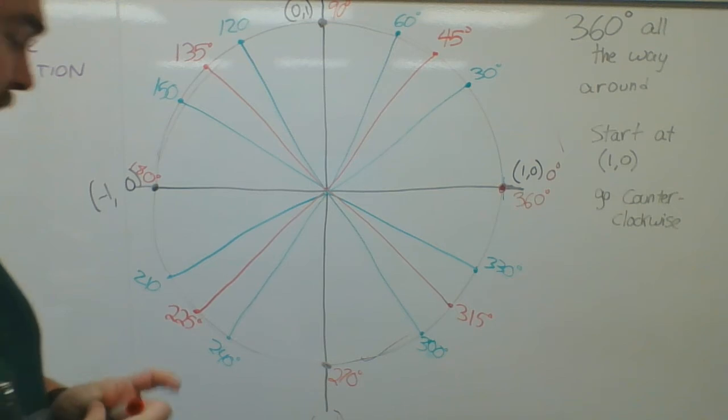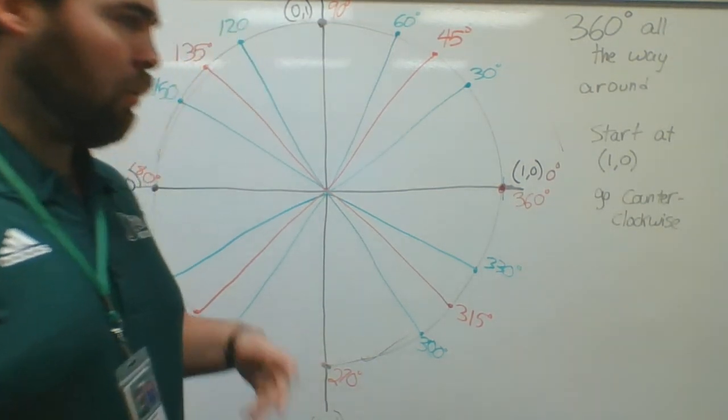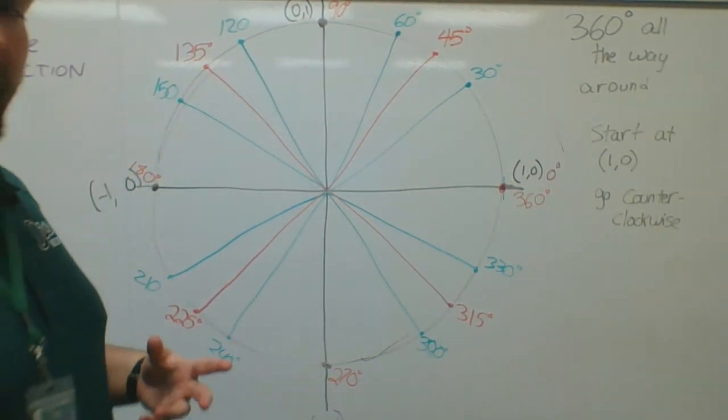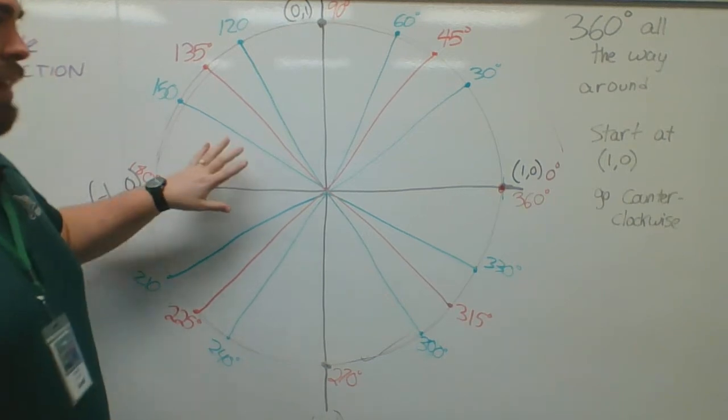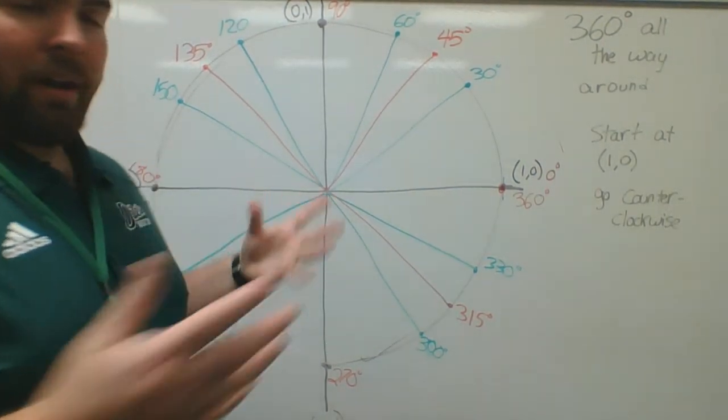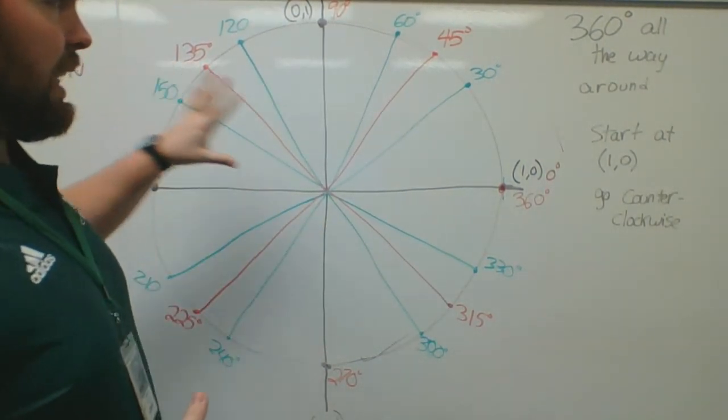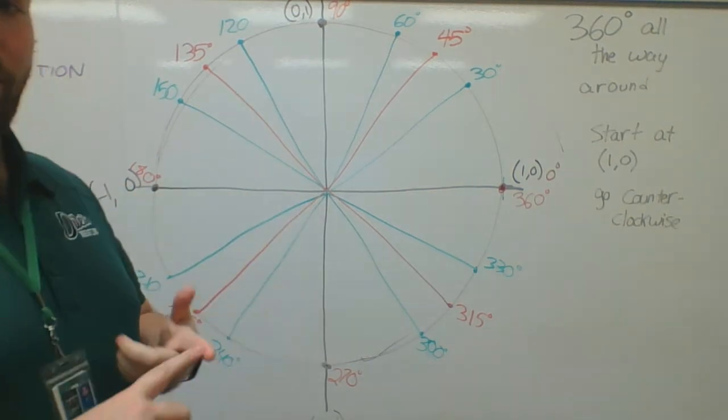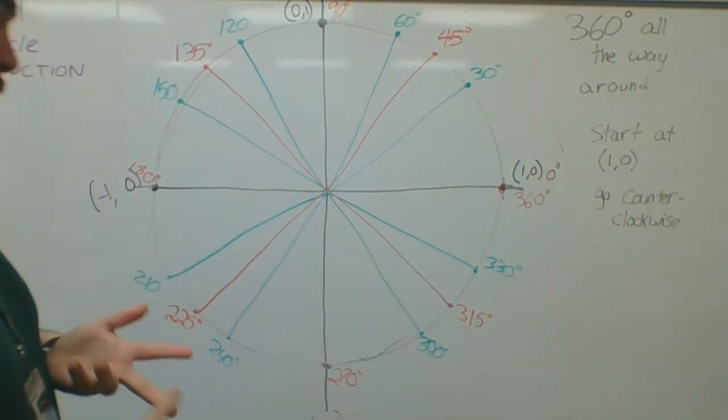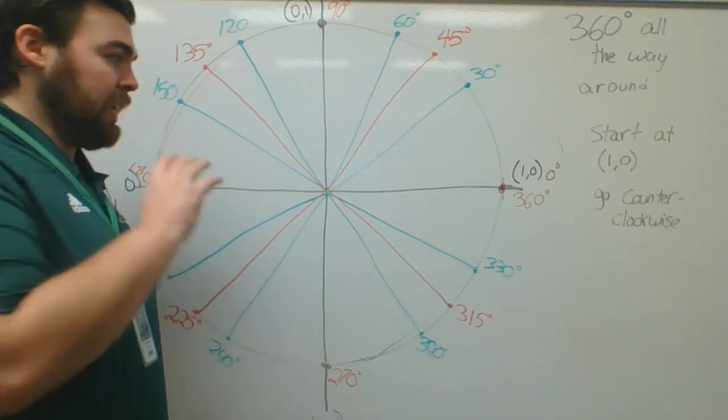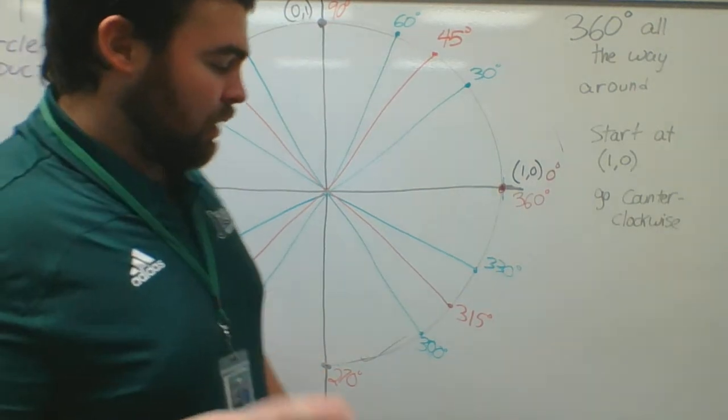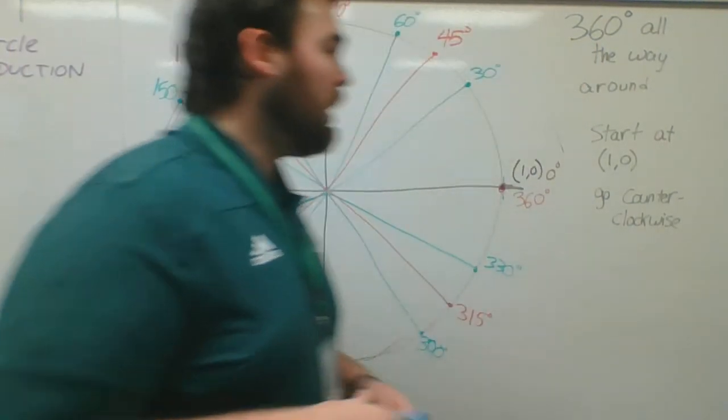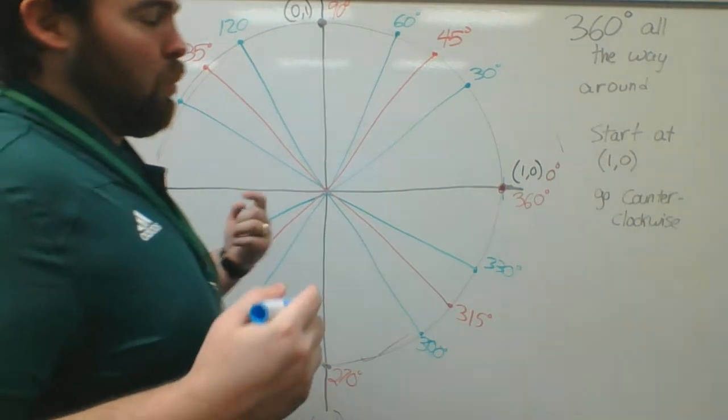So these are the basic angles with the unit circle. Make sure you have this nearby. When we go on further, we're going to use these same points. We're going to start talking about radius and coordinate points. Get this down.